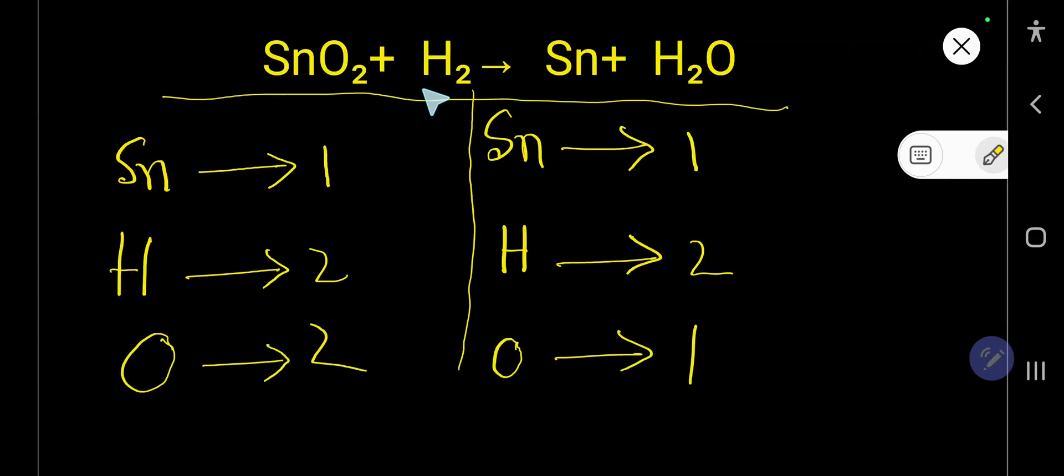How to balance SnO₂ + H₂ that produces Sn + H₂O. Looking at the left-hand side, one Sn, one Sn on the right, so we have nothing to do. Then here we have two hydrogen, two hydrogen, we have nothing to do.